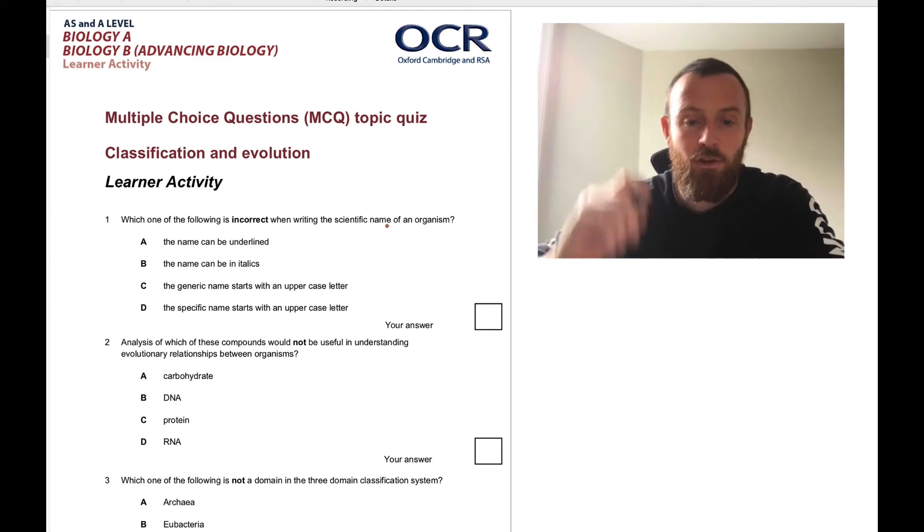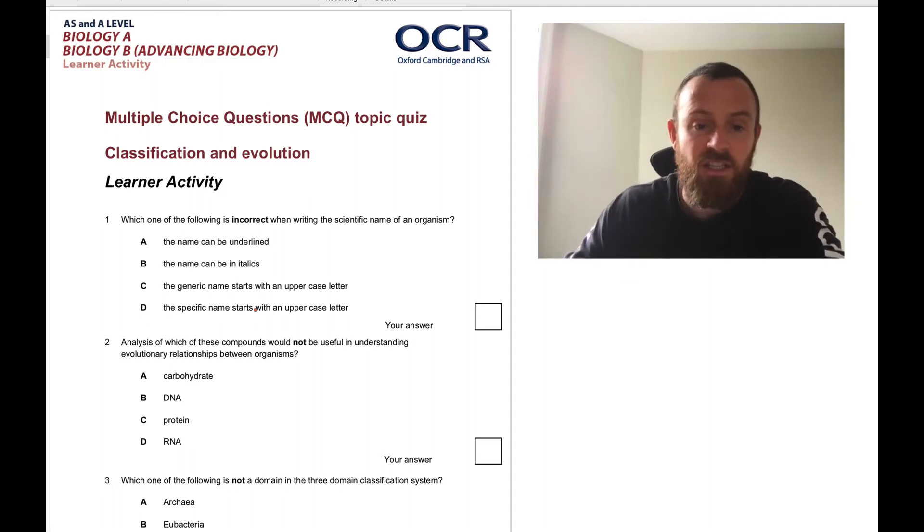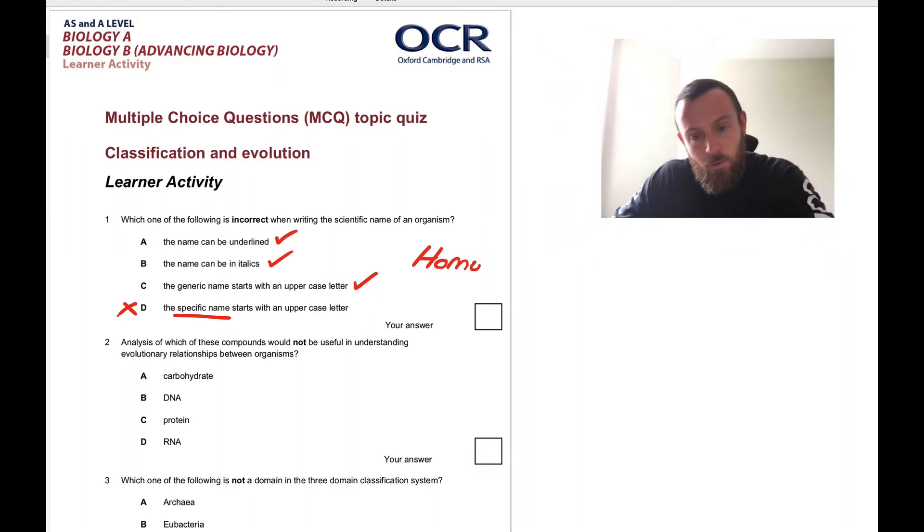Which one of the following is incorrect when writing the scientific name of an organism? The scientific name of an organism is always two words, the genus and then the species. The genus is capitalized and the species is not. The name can be underlined or in italics. The specific name, for example, we could write it in italics like this: Homo sapiens. The specific name does not start with uppercase. So the answer is B.